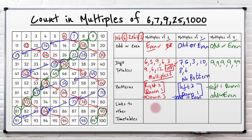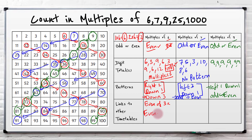Now what links to other times tables? Well the 6 times tables - if you notice, the 6 times tables is basically multiples of 3. It's half the multiples of 3, because 3 is in the 6 times tables as well. So it's the even multiples of 3. And then you could have here - it's the even of the 9 times tables as well. Look: 18, 36, 54, 72. So it's the even of the 9 times tables. The link between the 6s, the 9s, and the 3 times tables is good.